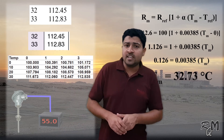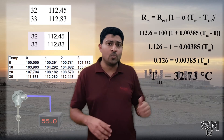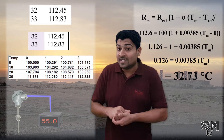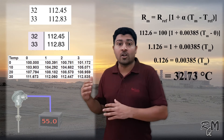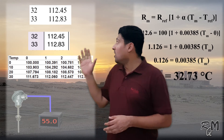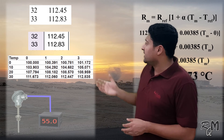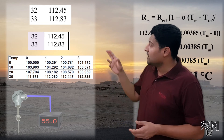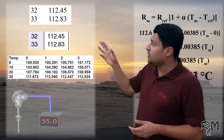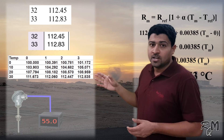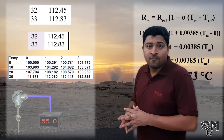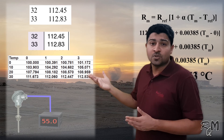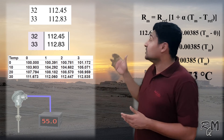Now we will check this value in our conversion table — is this value correct or not? You can see all three of these conversion tables. This value is lying in between 32 and 33 degrees C. So you can see you can easily find the temperature value through this equation.